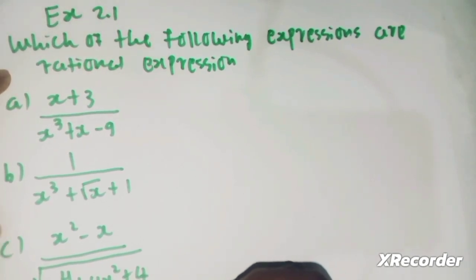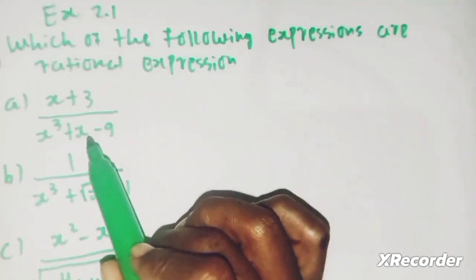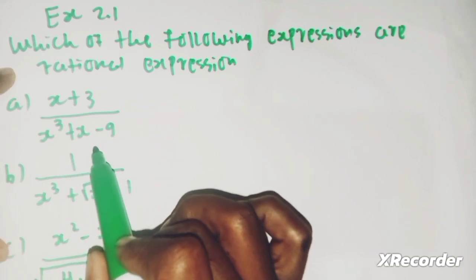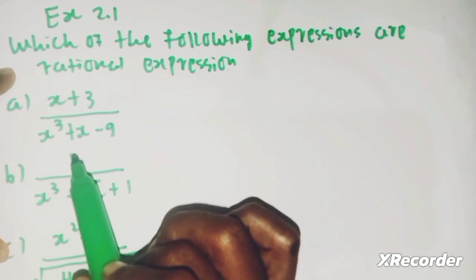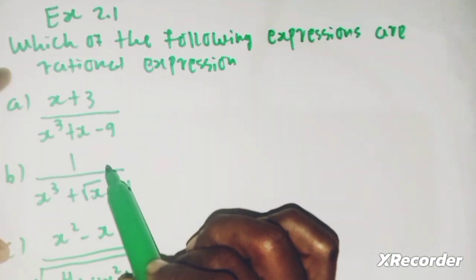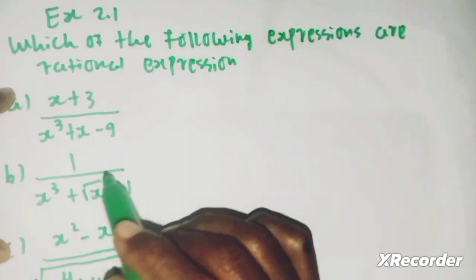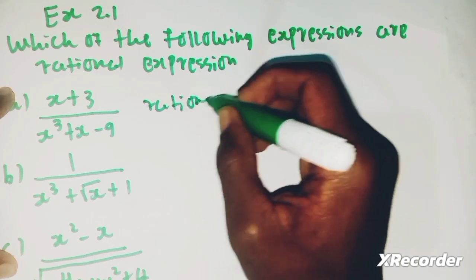Expression (a): x plus 3 over x cubed plus x minus 9. Here, x plus 3 is a polynomial and x cubed plus x minus 9 is also a polynomial. So the expression x plus 3 over x cubed plus x minus 9 is rational.